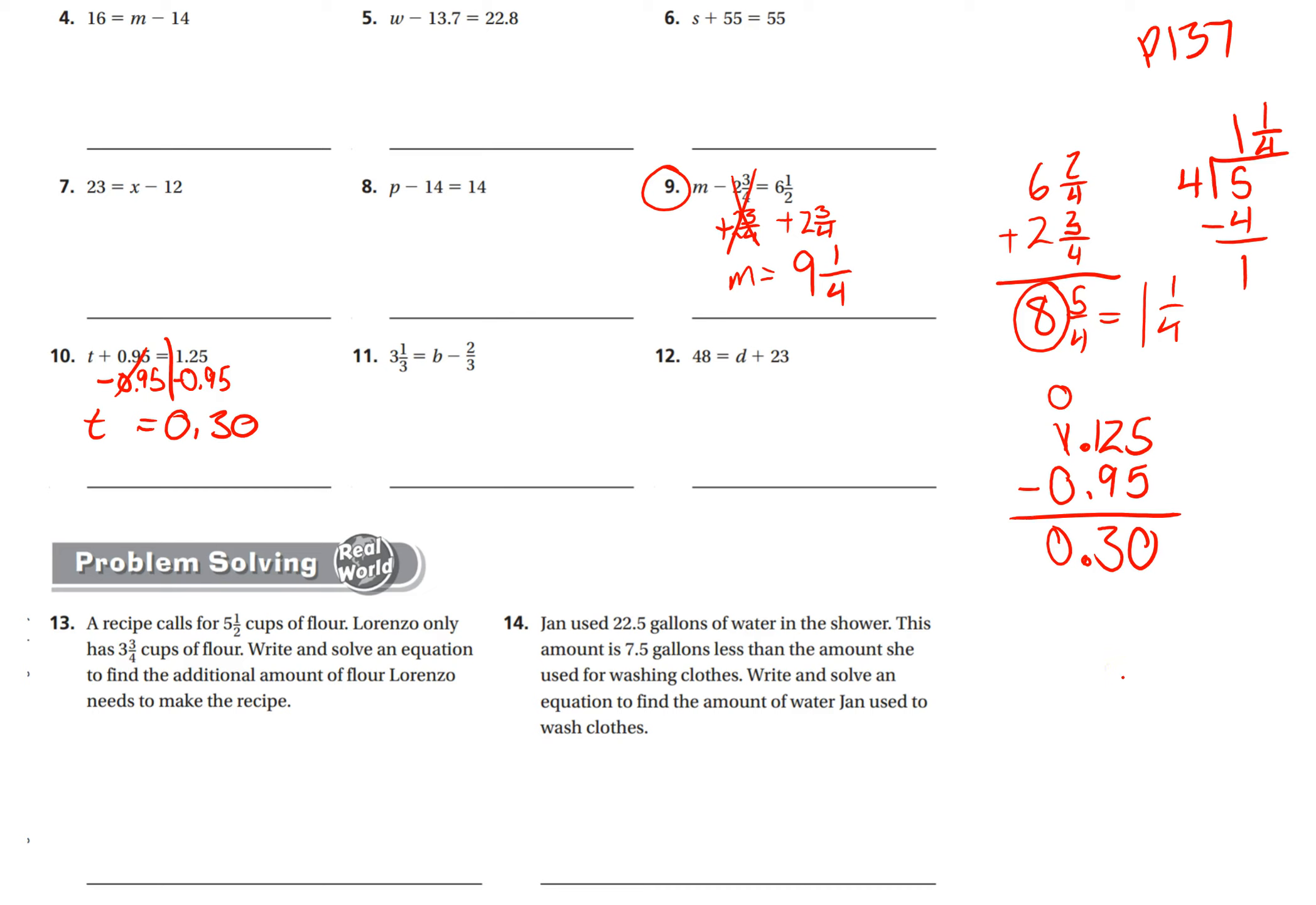All right, let's do one more. I'm going to do number 11 now. Again, this time the variable is on the right side, but that doesn't change what I want to do. I want to get this b by itself, so I have to do the inverse operation to get rid of this negative or minus two-thirds. So the opposite of subtraction is addition.